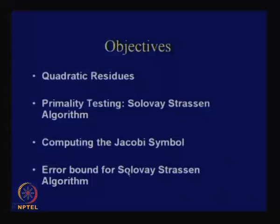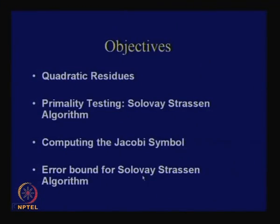Today we will discuss a primality testing algorithm, continuing with the RSA cryptosystem. Last time we motivated why we study primality testing — because we need to choose large prime numbers p and q. We need an algorithm to determine whether a number is prime or not. We were also continuing with quadratic residues, and today we will discuss the Solovay-Strassen algorithm, the Jacobi symbol, how to compute it efficiently, and some error bounds.